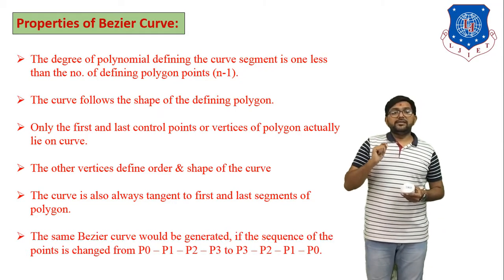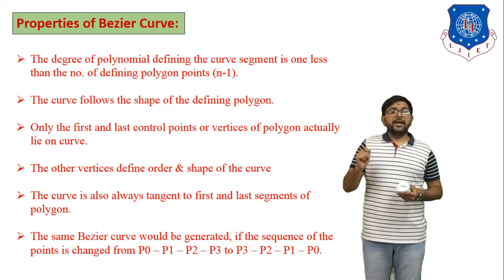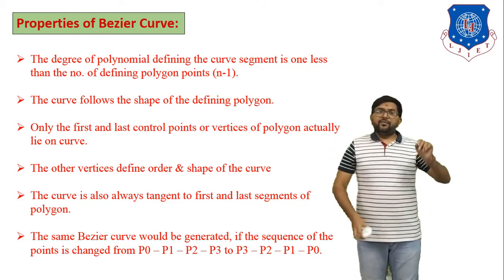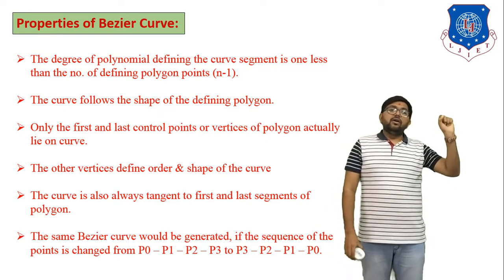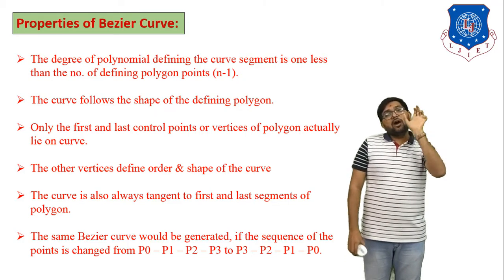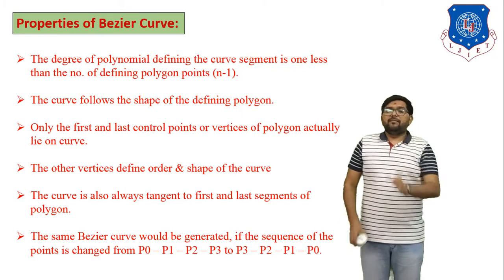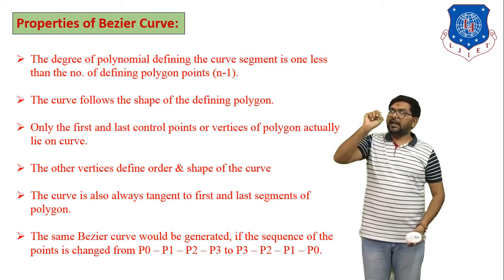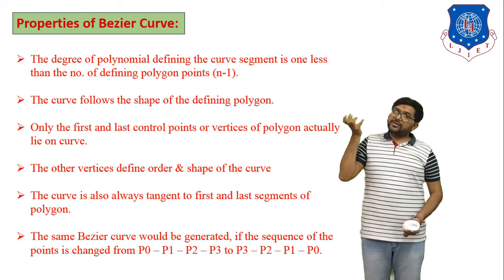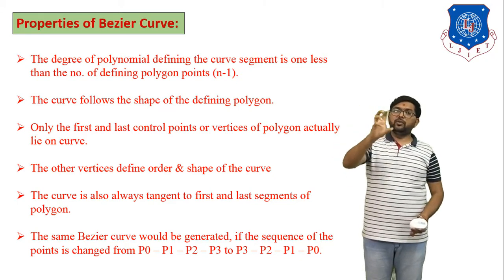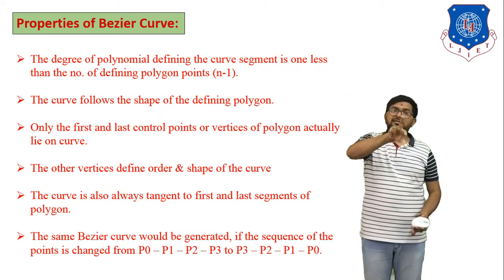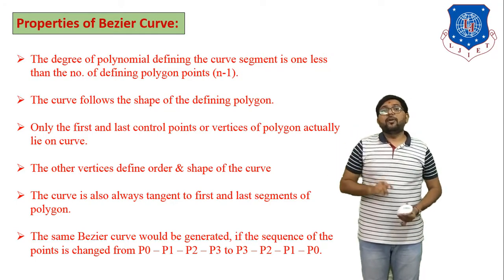Sixth property: the same Bezier curve is generated whether the sequence of points goes from P0, P1, P2, P3 or is reversed to P3, P2, P1, P0. That is, drawing the Bezier curve from start to end or from end to start produces the same output. Both methods give identical results.